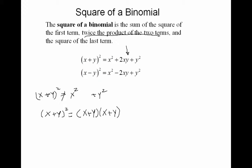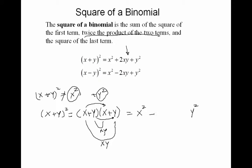If I multiply term by term, x times x gives me x squared. Multiplying the last terms together, y times y gives me y squared. But I also have to multiply the two closest terms and two furthest terms, which gives x·y and x·y. That's why you have 2xy there — the middle term would be 2xy, so don't forget this term.